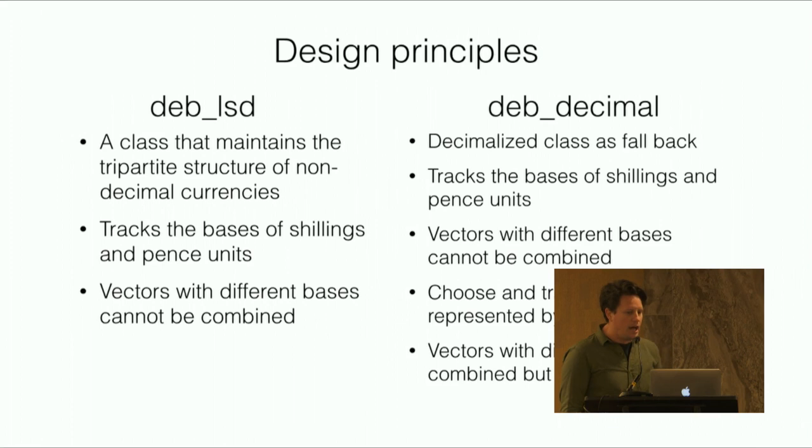I'm calling these classes deb_lsd - deb is short for double entry bookkeeping, which is where you find all these different values - and then deb_decimal.